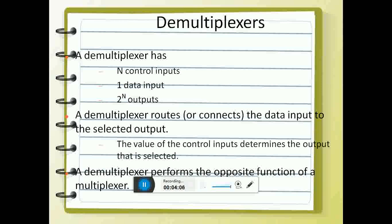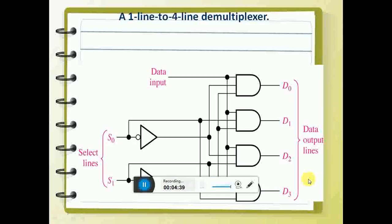Next, demultiplexers. What we talked about with multiplexers was many to one. A demultiplexer is one to many — it is just the reverse of a multiplexer. It has N control inputs but only one data input, and the number of data outputs is determined by 2 to the power N. It routes the data input to the selected output, and the value of the control inputs determines the output being selected. So it performs the opposite function of a multiplexer.